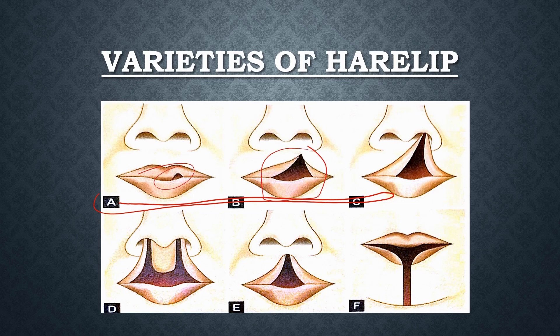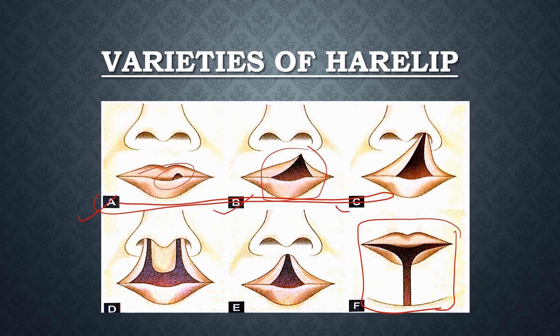Bilateral means failure of fusion of both the maxillary processes, and the midline one means defective development of the lowermost part of the frontal nasal process, which you can see here. So unilateral ones are from A, B, and C. Bilateral ones are point D, and point E is the midline cleft.